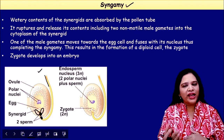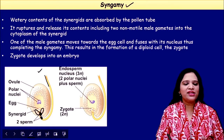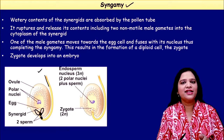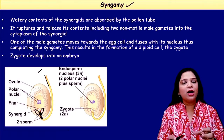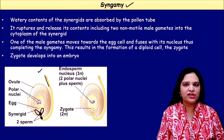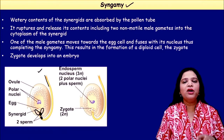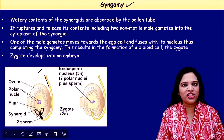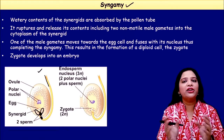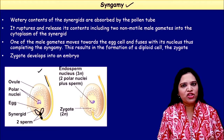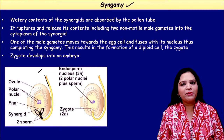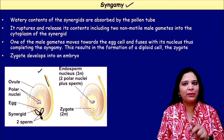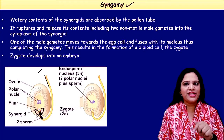The pollen tube enters through one of the synergid cells. Once it enters the synergid cell, it absorbs water from the synergid cell and ruptures — that is the endpoint of the pollen tube. It won't grow further; it ruptures and releases the two male gametes inside.